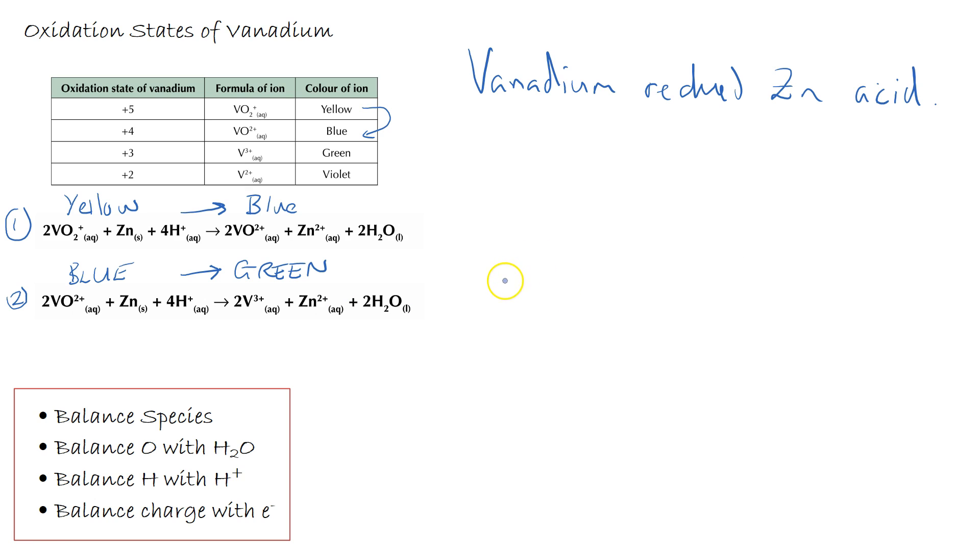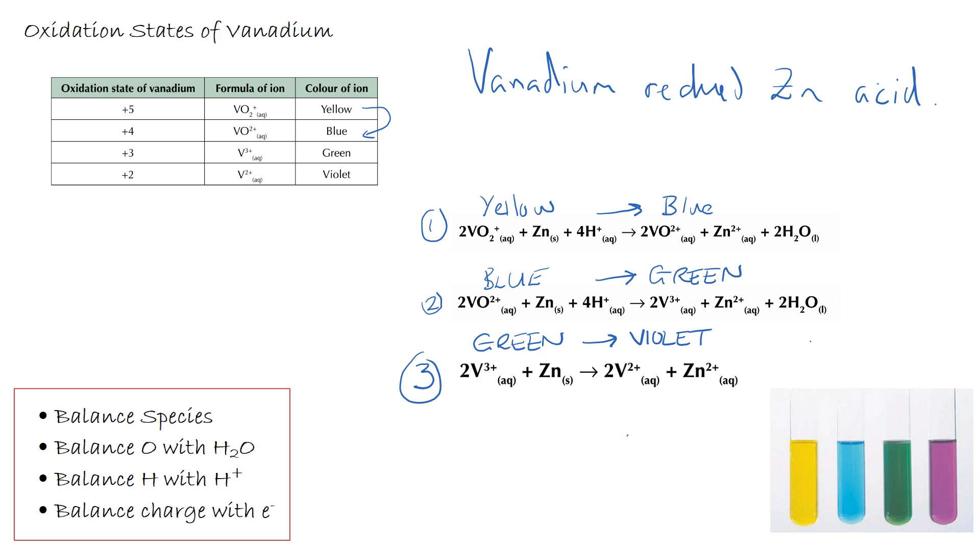The final reaction is from green to violet where we've got V3+ going to make vanadium two plus. In this one the species are the same, there's no oxygens to balance, there's no hydrogens to balance, so we simply add electrons. Then we're doing the other half of the redox reaction, the oxidation: zinc to zinc two plus plus two E minus. We multiply this one up by two. So we end up with 2V3+ plus Zn giving us 2V2+ plus Zinc two plus.